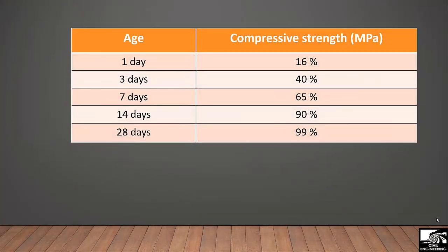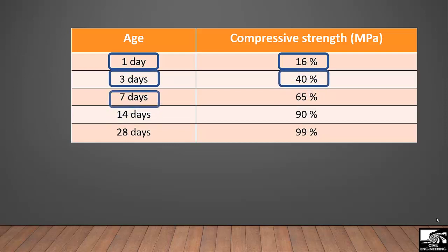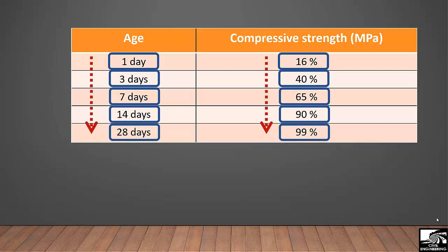The relation between age of concrete and compressive strength is very important to understand. At the very first day concrete achieved only 16% of its strength. At the age of 3 days it gains 40% strength. In 7 days it gains 65%. At the age of 14 days it gains 90%, and at the age of 28 days it gains 99% strength. This clearly shows that concrete strength increases with time, but it should be noted that concrete can never gain 100% strength.